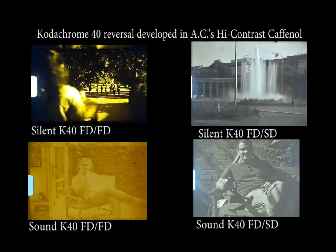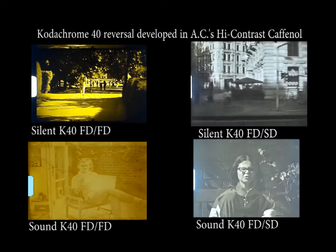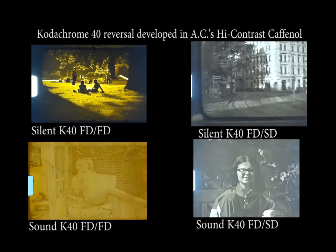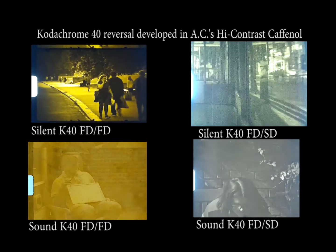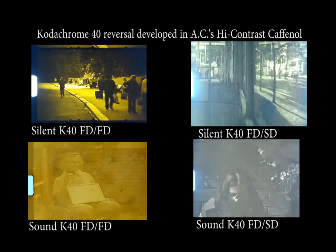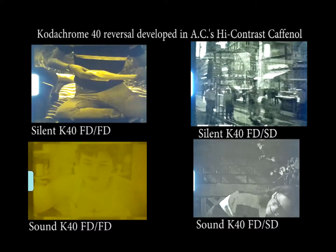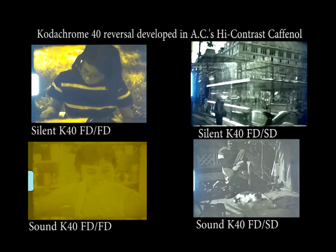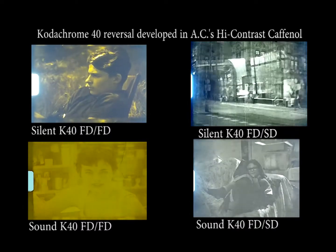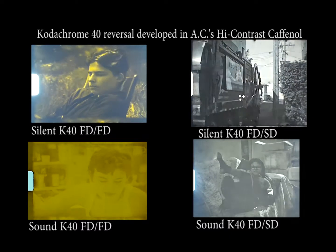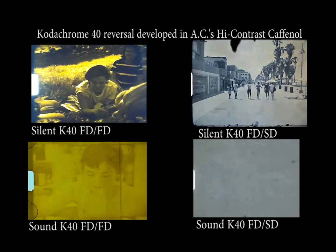Maybe the Kodachrome 40 silent film has a thicker emulsion — I don't know — but it looks better. From now on, unless I need sound, I'll be shooting on K40 silent and using the first and second developer. Unless I want a yellow color, in which case I'll use the first developer, bleach, re-expose, then back into the first developer for that lovely yellow tint. Keep watching and keep filming — see you later.